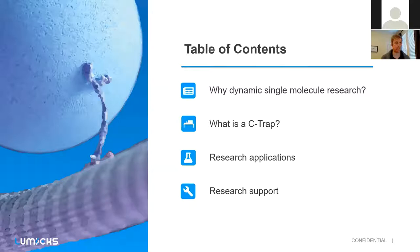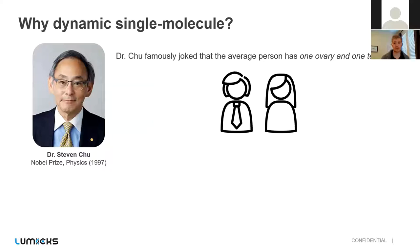So to begin talking about why you would be interested in studying dynamic single molecule research, I want to begin with this kind of silly example from Dr. Steven Chu, who obtained a Nobel Prize in Physics back in 1997 for some of the technology we'll be discussing today. And that example is that Dr. Chu famously joked that the average person has one ovary and one testicle, if you look at the population as a whole. And that's absurd, right?